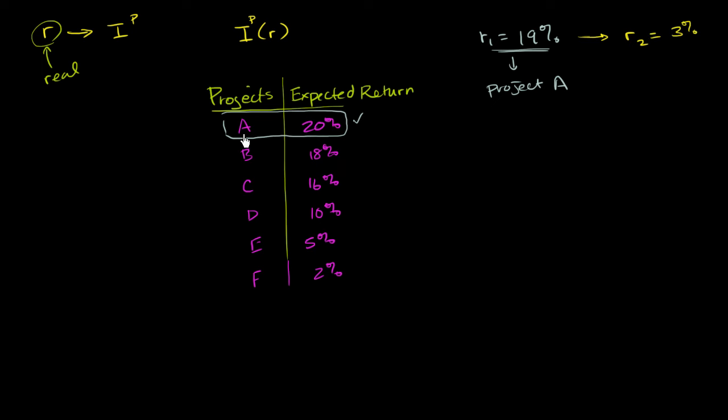Well, once again, project A you are definitely going to do. If you have the money on hand, you get 20% doing project A. You definitely don't want to lend it out at 3%. If you don't have the money on hand, you can borrow at 3% and invest at 20%. And so by the same logic, people would do project B. You could borrow at 3% and make 18%. Or if you have the money, you get 18% versus 3% on your money. So you definitely do this. You do all of these up to, you would even do project E.